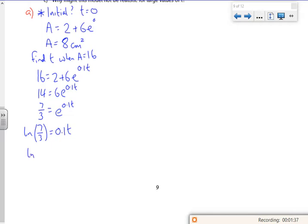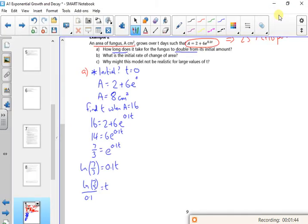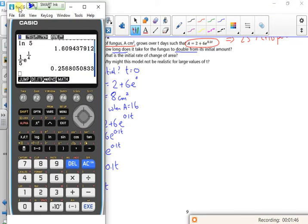So I'm doing log of 7 over 3 divided by 0.1, let's use the calculator while I'm in here. It's all nice and peaceful.